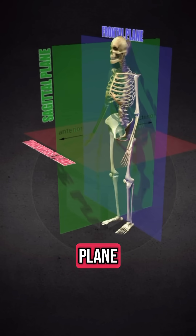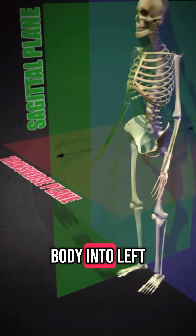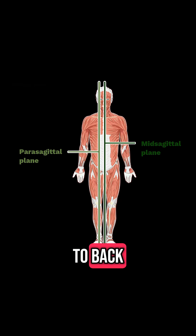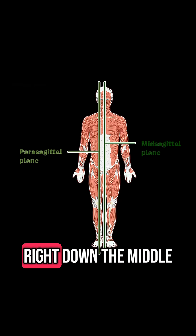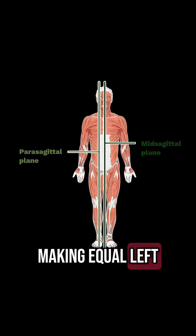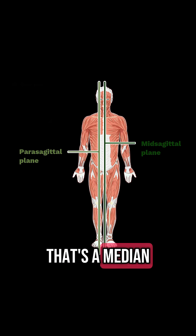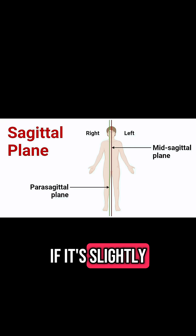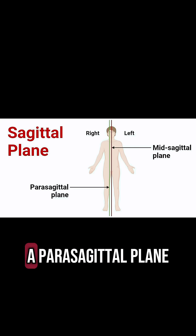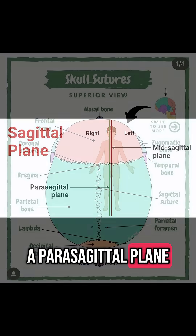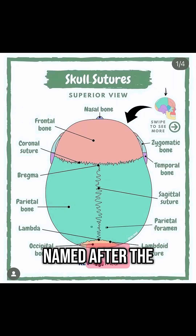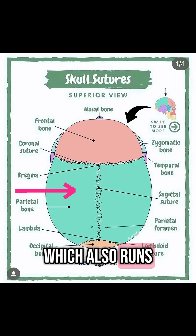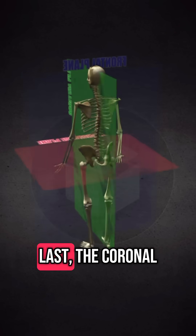Now, the sagittal plane. It divides the body into left and right parts, running from front to back. If it goes right down the middle, making equal left and right halves, that's the median or mid-sagittal plane. If it's slightly off-center, we call it a parasagittal plane. Fun fact: it's named after the sagittal suture in the skull, which also runs front to back.